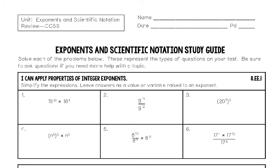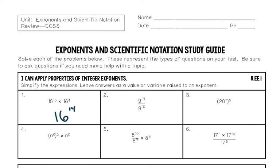So let's get started. This is our exponents and scientific notation unit. Below is our 'I can' statement and the standard — that's what every Kentucky eighth grader needs to know. We'll simplify each expression, leaving answers as a value or a variable raised to an exponent. The first section is all about exponent rules. Number one is an example of the product rule: we have the same base 16 being multiplied, and the product rule says I can add the exponents. This is like having ten 16s and then four more 16s being multiplied, so this equals 16 to the 14th power.